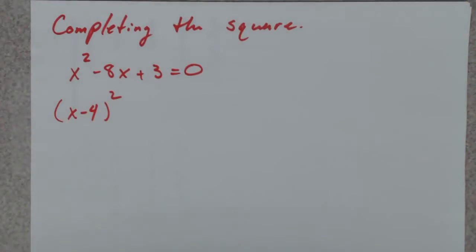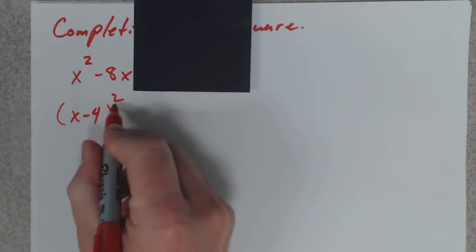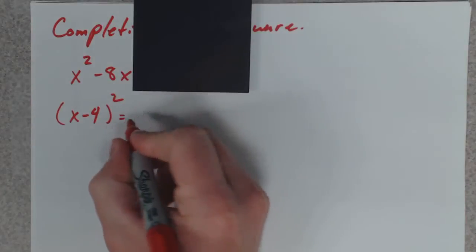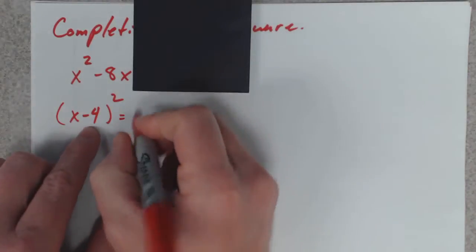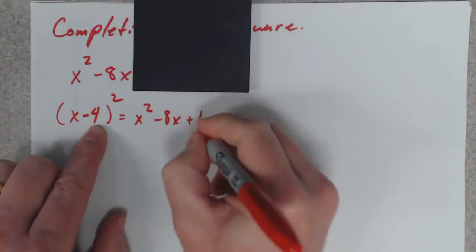So, I'm going to put a blinder on you. Act like that's not there. What is x minus 4 squared? Remember the shortcut. x minus 4 squared is the same thing as x squared minus 8x plus 16.